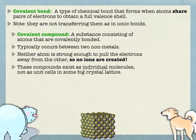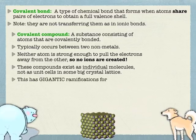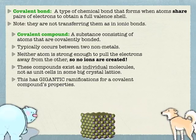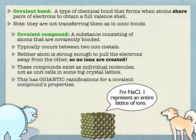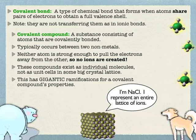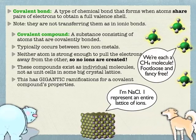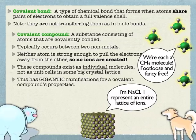Everything we know about compounds so far really gets thrown out the window. Instead of giant crystal lattices, you have individual molecules. When we say NaCl, we're representing a giant crystal lattice. But when we're talking about something like water or methane — CH4, for instance — we are actually talking about a discrete molecule that within its borders has only one carbon and four hydrogens. That opens up properties between molecules that you really don't see in ionic compounds, because in ionic compounds everything is chemically bonded together.